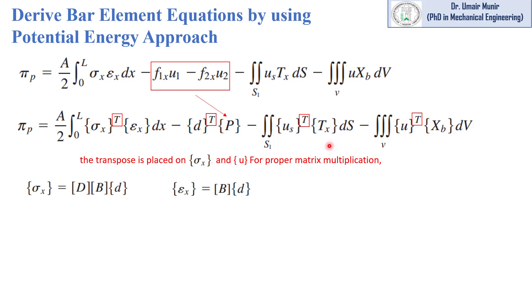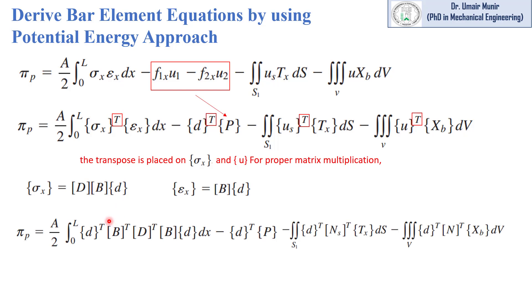We have already derived that sigma x equals D, B, and small d matrices, and that epsilon x equals B matrix times d matrix. Substituting these values into the total potential energy equation, we get the equation of total potential energy in this expanded form.